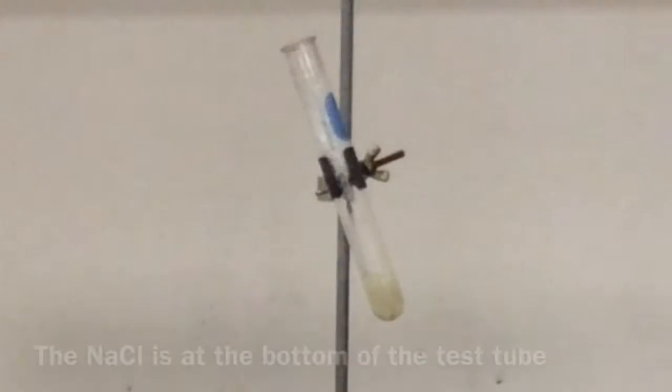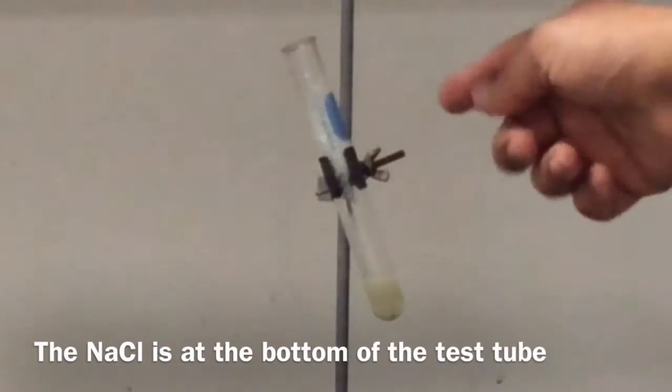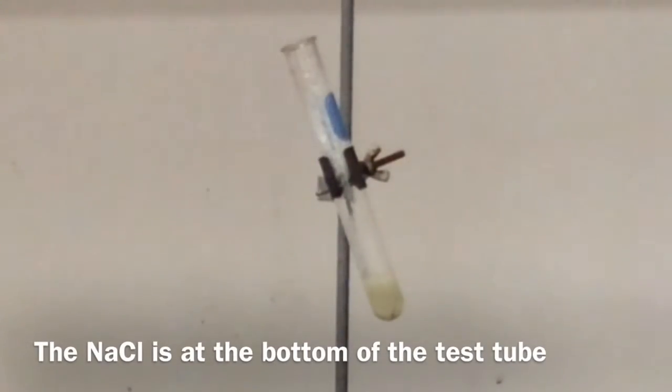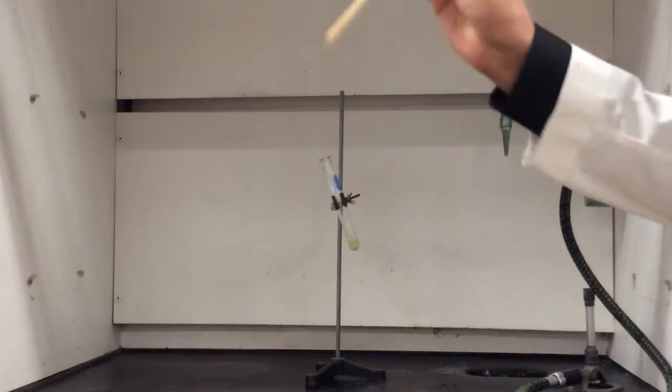Now down here at the bottom, we have this hot molten sodium chloride, but above it in the test tube, as you can see, we have this pure oxygen gas. Of course, you can't see that, but let's see what happens when we add some fuel to the mixture in the form of this wood splint.